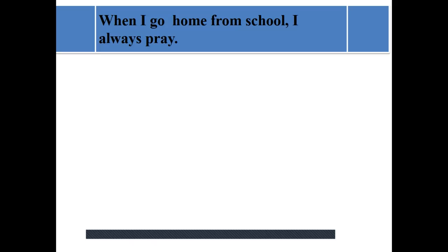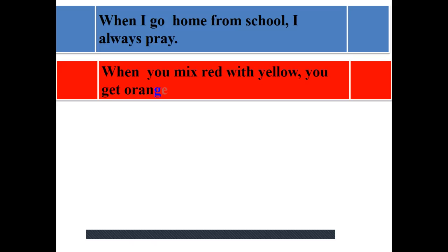Let's see number 2. When you mix red with yellow, you get orange. This happens all the time. When we mix red with yellow, we get orange. This is a rule. This is a fact in art, something realistic that always happens. That's why we use it in the present simple.